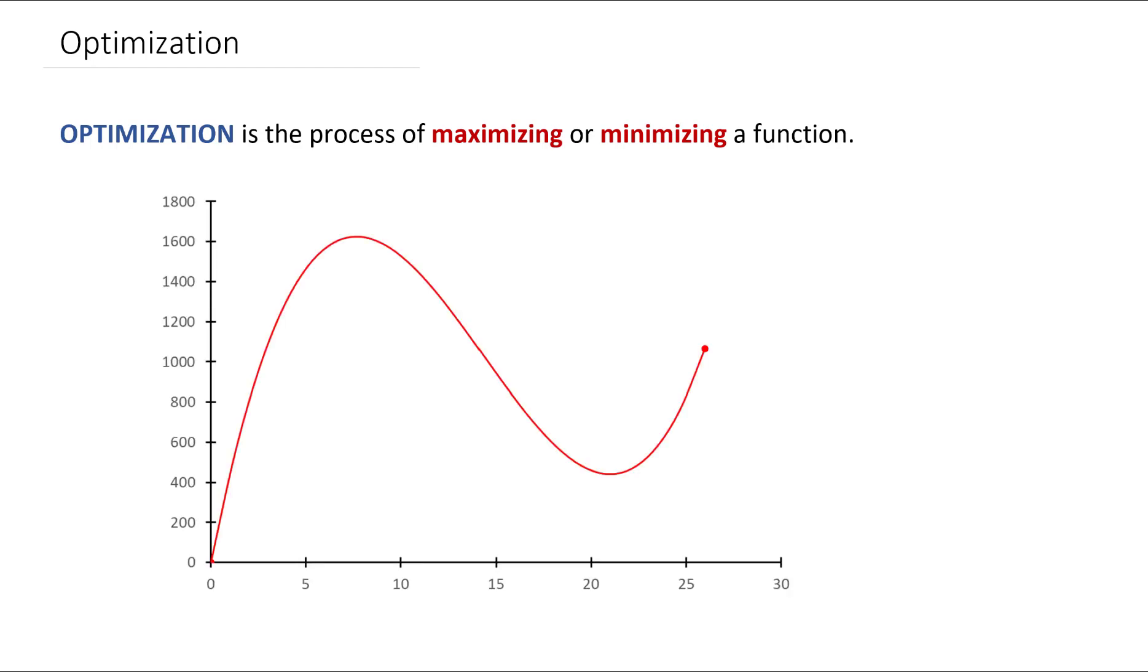Well, the process of optimization is the same. We take the function we want to optimize, say this function we have here, and we locate its critical points, so the points where the slope is equal to zero.